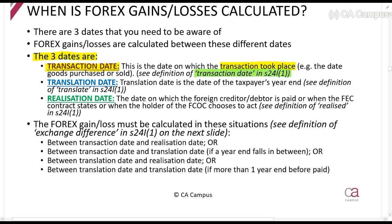The transaction date is, for example, when goods are loaded FOB onto a ship. The translation date is the taxpayer's year-end, as found in the definition of 'translate' in Section 24i(1). The realization date is when the foreign debtor or creditor is paid, when the FEC contract states it is payable, or when the holder of an option chooses to act — basically, the moment the obligation is settled.